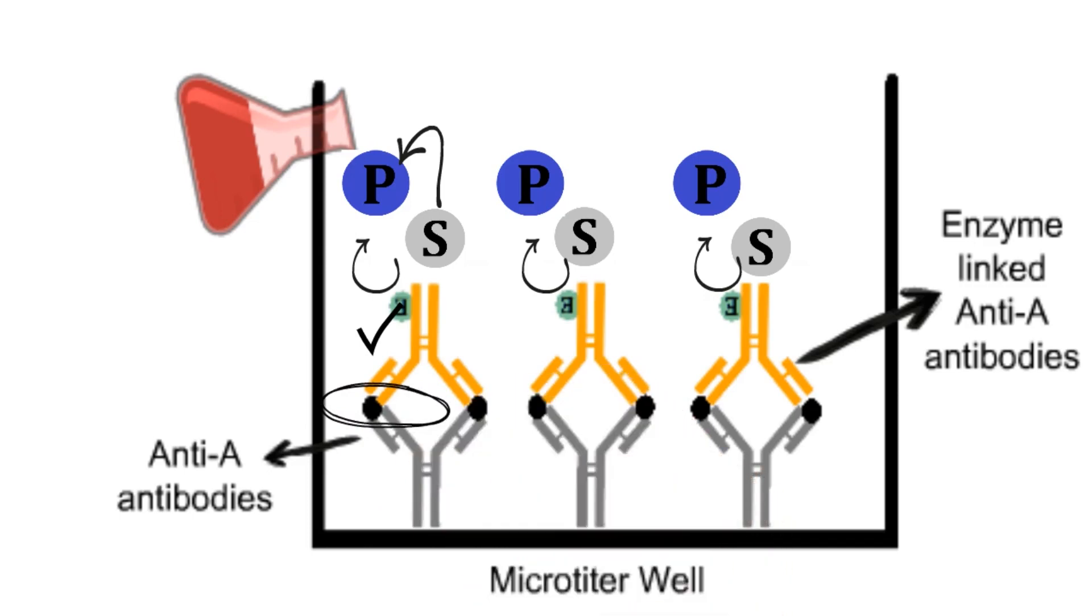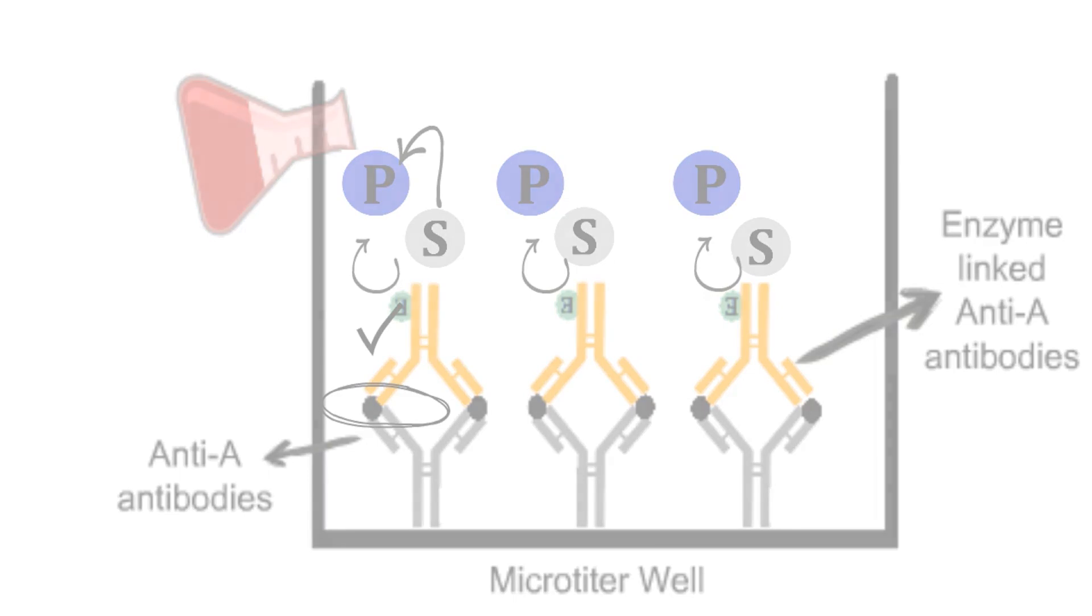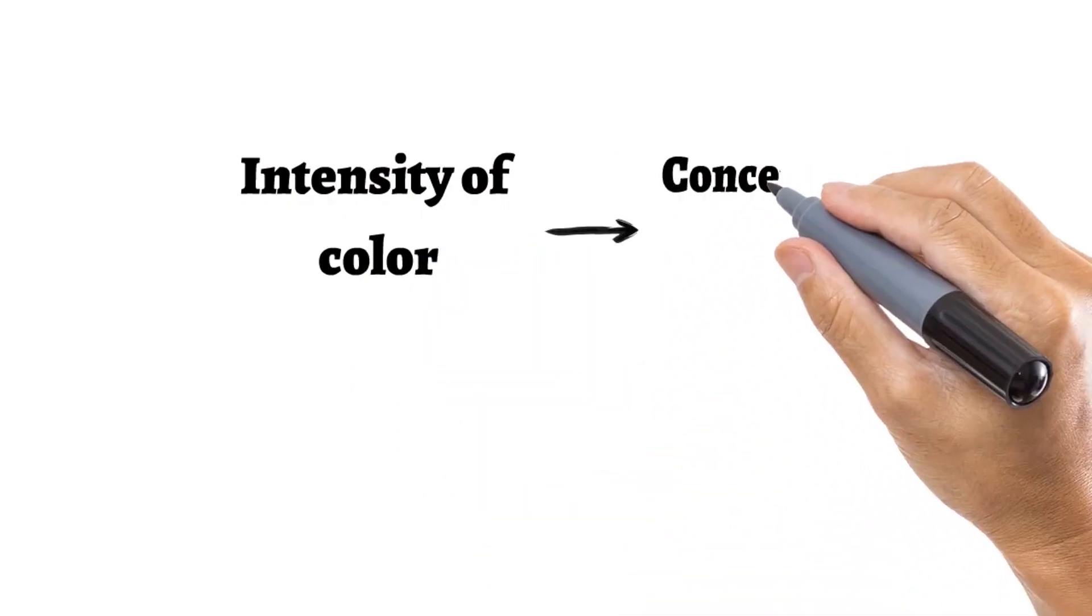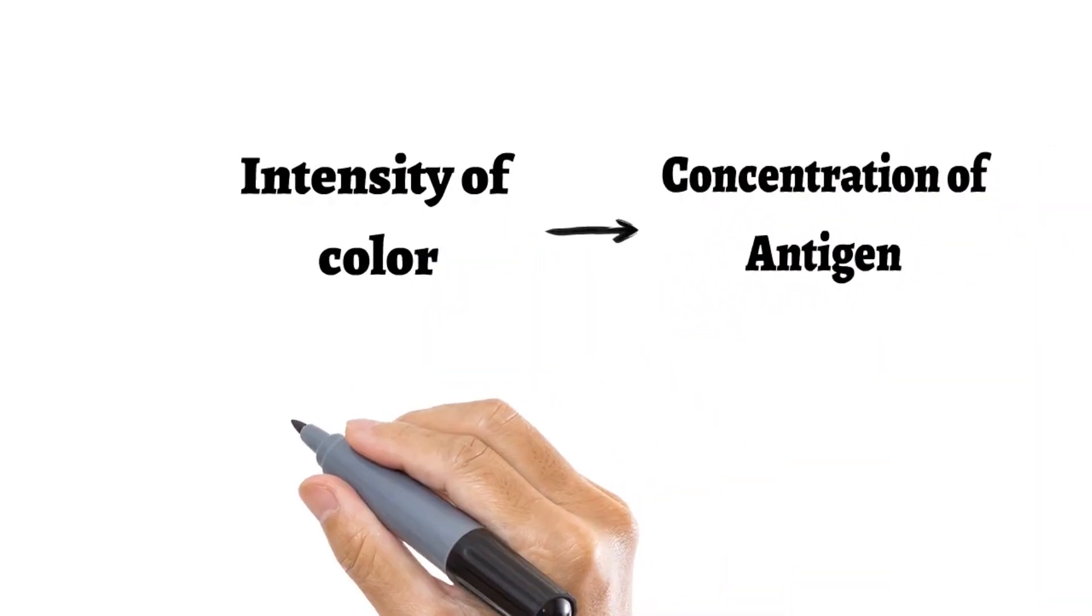So in short, the development of color indicates that A antigen was present in the sample. The intensity of the color is directly proportional to the concentration of antigens. So by measuring the absorbance of the color, one can determine the concentration of antigen as well.